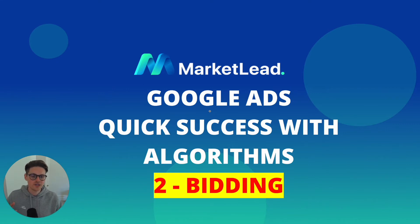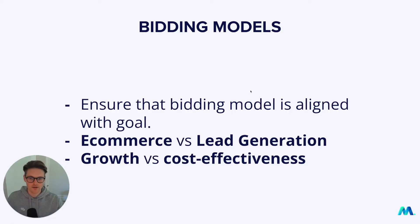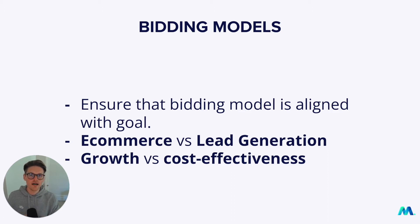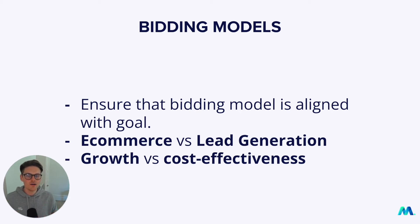So let's jump in — bidding models. Ensure that bidding models are aligned with your goal. There are so many bidding models in Google Ads now, and I only stick to a select few. In the past I was very manual, but now I'm using a lot of automated and algorithmic bidding models because they just simply work. I used to be against them because I thought they'd take away my job, but now I realize the best results come from algorithmic bidding models in Google Ads.